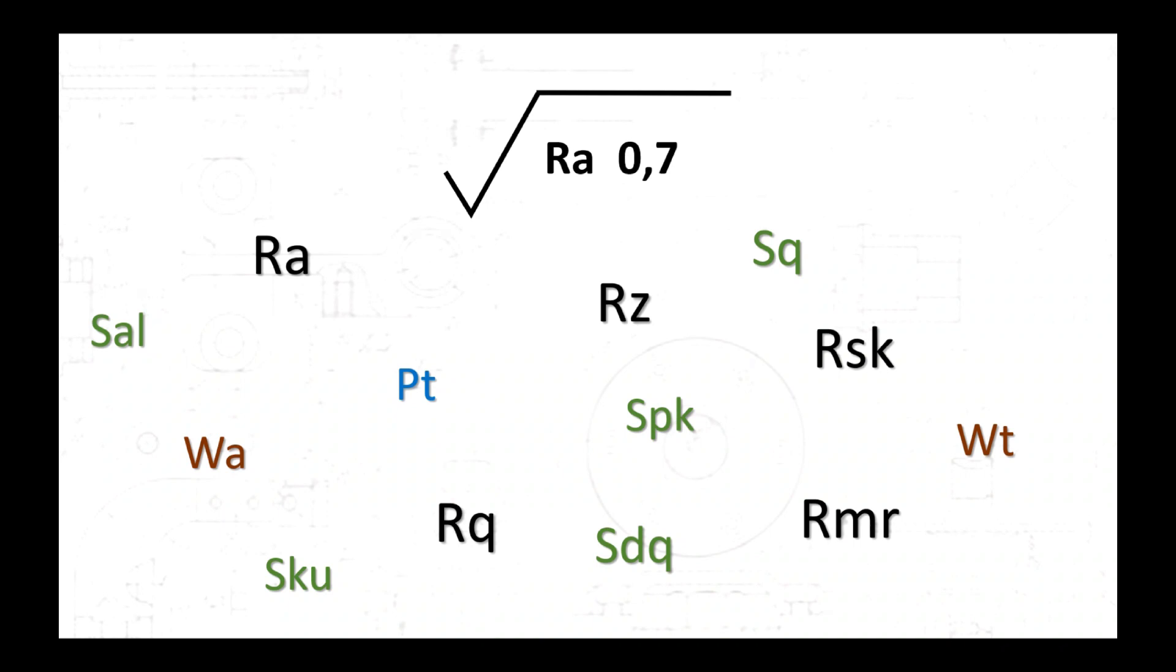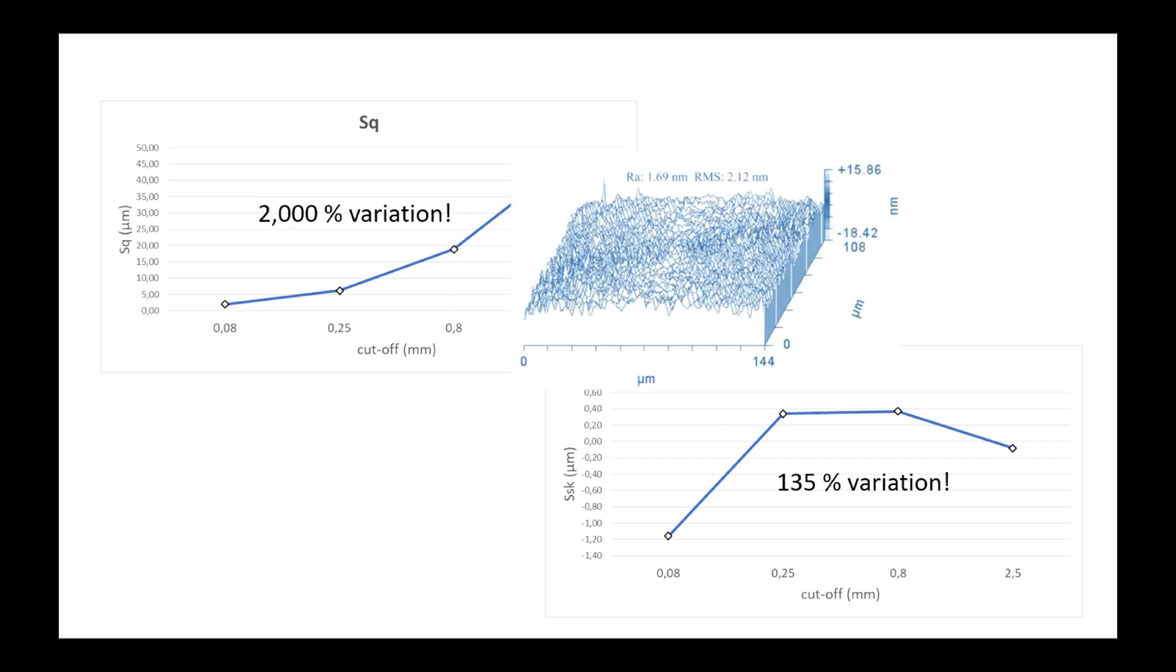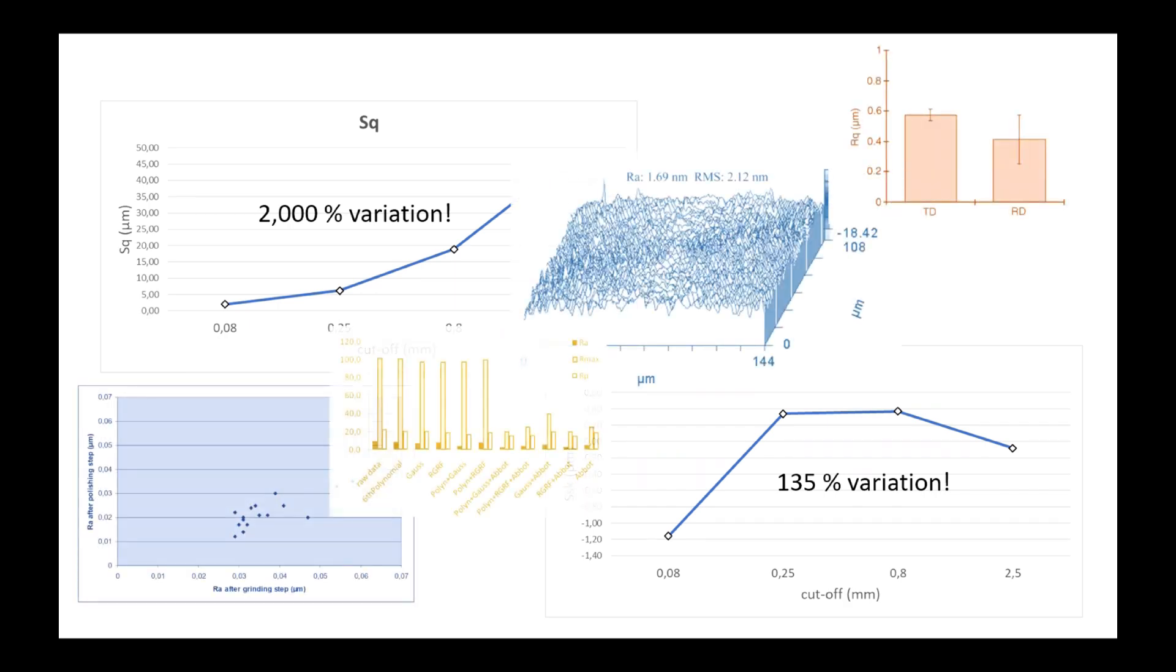The role of these filters is fundamental in the parameter results. A filter can completely change the value of a parameter. That is why providing a parameter result without giving its filtration context is useless, since you can obtain any value by changing the filter type and cutoff. It is important to understand how filters work and what they are used for, in order to use them correctly.